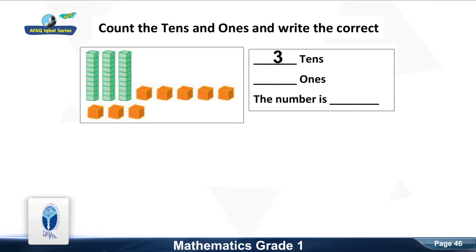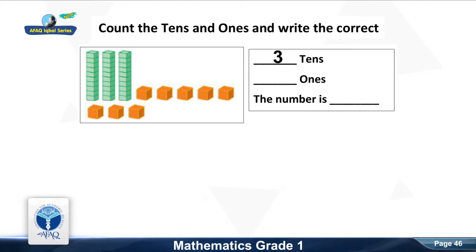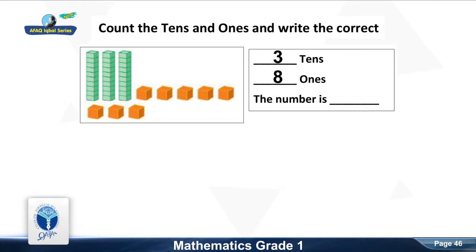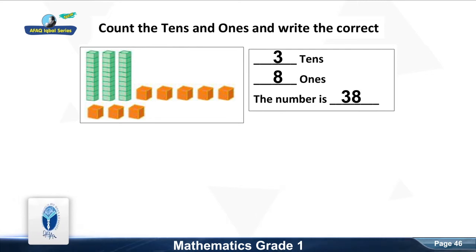It is 3. Good, it is 3. Now count the ones. Good, it is 8 ones. The number is thirty-eight.